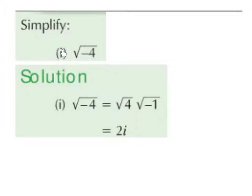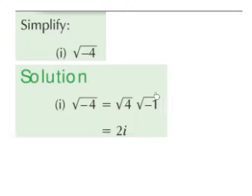Part 1. We want to simplify the square root of minus 4. We cannot find the square root of a negative number, so we break it down into the square root of positive 4 multiplied by the square root of minus 1. The square root of 4 is 2, and the square root of minus 1 is i.